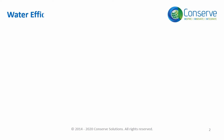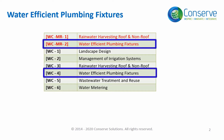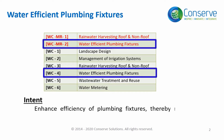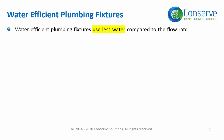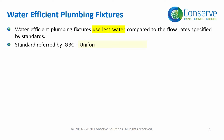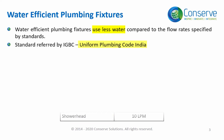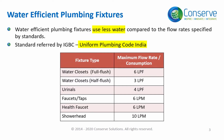Water efficient plumbing fixtures is addressed in water conservation mandatory requirement 2 and credit 4. The intent or objective of this prerequisite and credit is to enhance the efficiency of plumbing fixtures and thereby minimize the potable water use. Water efficient plumbing fixtures use less water compared to the standard specified by IGBC, which is the Uniform Plumbing Code India. This table prescribes the maximum allowable flow rate of plumbing fixtures as per Uniform Plumbing Code India.